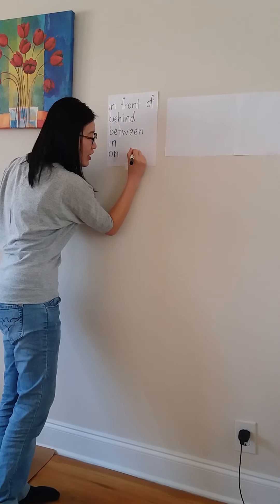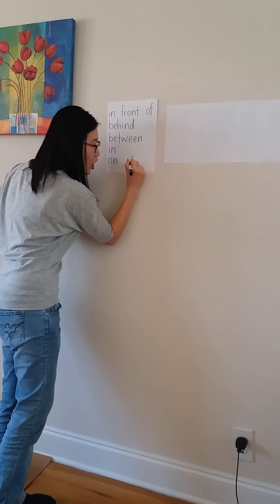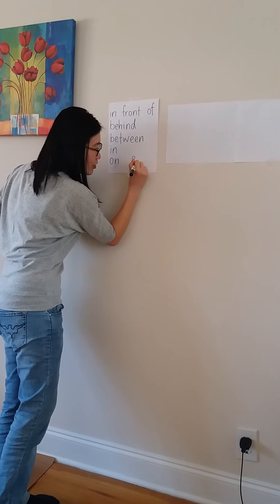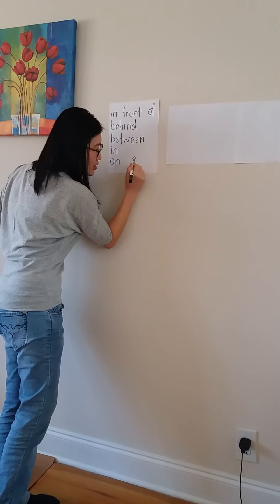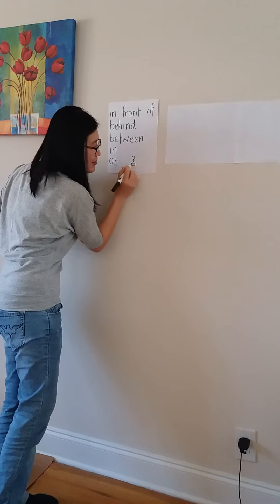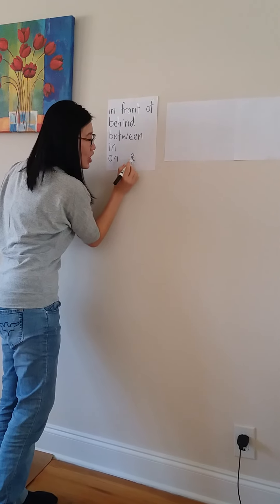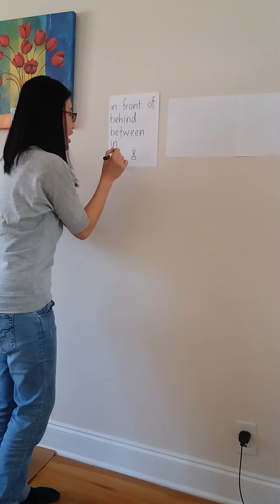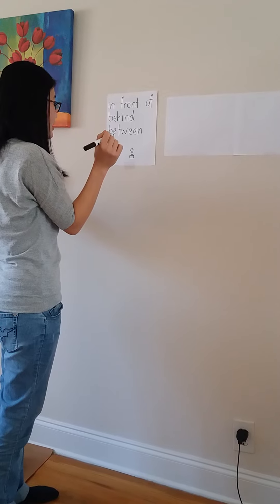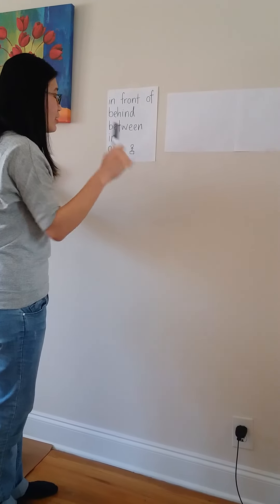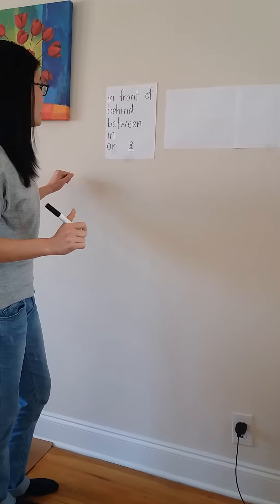On a chair. I'm just going to draw this—this is a chair—and the person is on the chair. Okay, so: in, on, under. I'm going to teach 'under' as well.